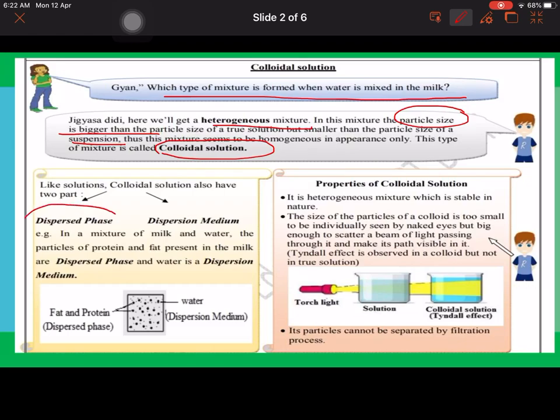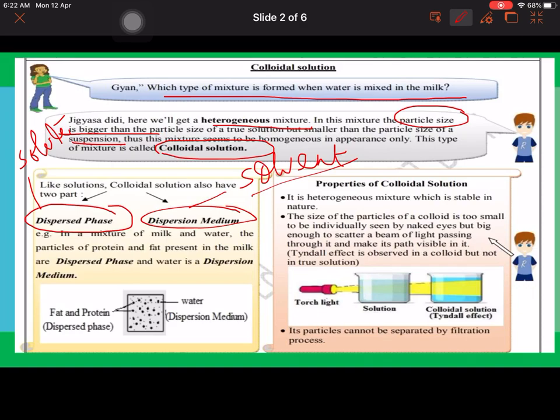It has two parts: one is dispersed phase and one is dispersion medium. The dispersed phase is like solute and dispersion medium is like solvent. In a mixture of milk and water, the particles of protein and fat present in the milk are dispersed phase and water is the dispersion medium.